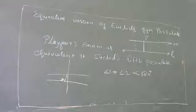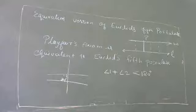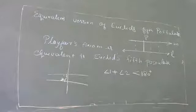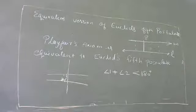The second question asks: does the fifth postulate imply the existence of parallel lines? You can explain that while the fifth postulate does not explicitly mention parallel lines, it implies them. This chapter ends here, and the next chapter will start in the next class.